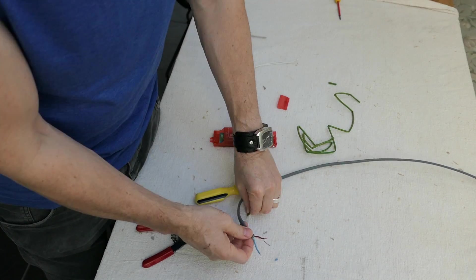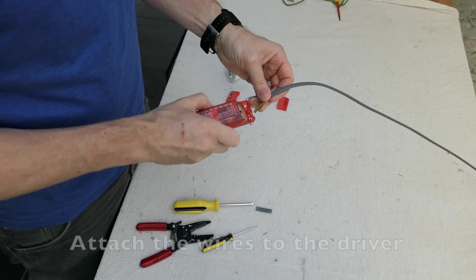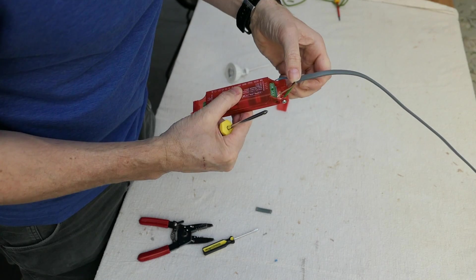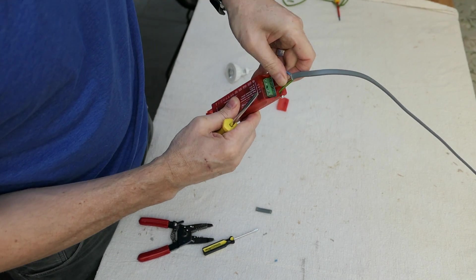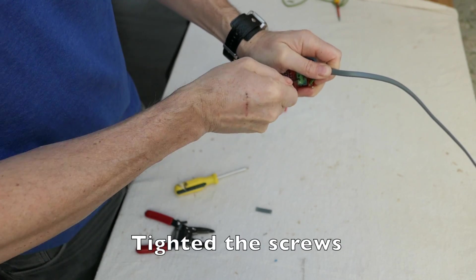Cut the earth sleeve to size and place over the cable. Attach the earth cable onto the driver. The live goes into the section marked L. Make sure it is firmly tightened.